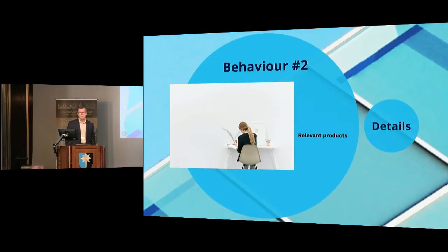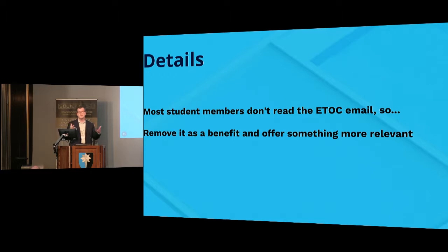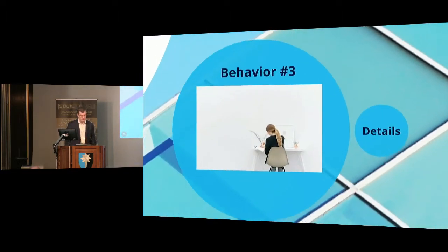Another example: relevant products. You'll discover that most of the student members don't read your e-talks that you send out — they don't click on the email, they never click on that link. So remove it as a benefit and offer something else. Sounds like very simple logic, but this is the kind of analysis that can be performed on your system to find out what people want.